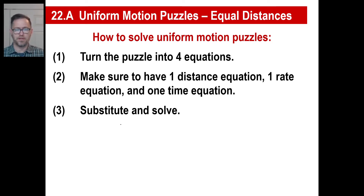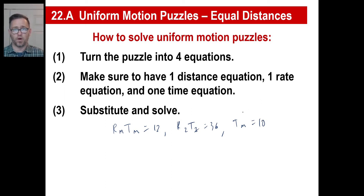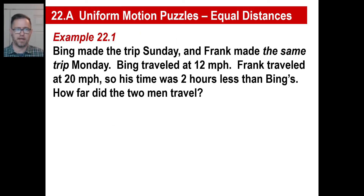You remember these kinds of things you did a couple of weeks ago? Like R sub M times T sub M equals 12, or R sub Z times T sub Z equals 36, or T sub M equals 10 or whatever. You're going to make those equations yourself. Remember, there were always four of them. You're going to make those four using the little paragraph. So let's look at a little paragraph.